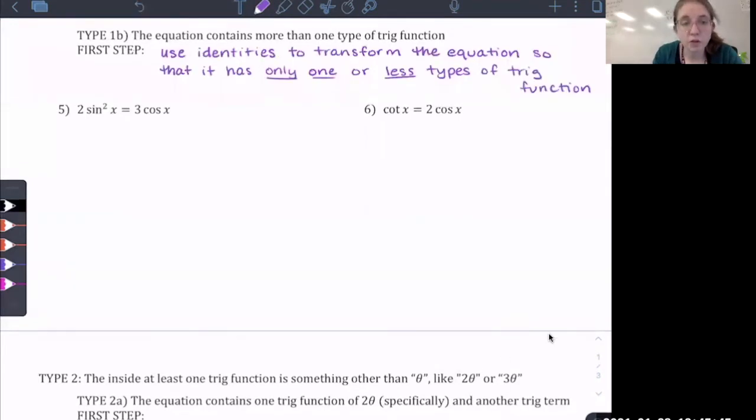For example, if we look at number five, I see that it has a sine squared term and also a cosine term. My options would either be to turn the sine squared into cosine, or to turn the cosine into something with sines. We don't have any identities that relate sine and cosine when they're not squared, but we do have identities, the Pythagorean ones, that relate sine squared to cosines when we have the squares. So we want to change the sine squared x, not the cosine. And we know that sine squared theta is the same thing as 1 minus cosine squared theta, or in this case, x.